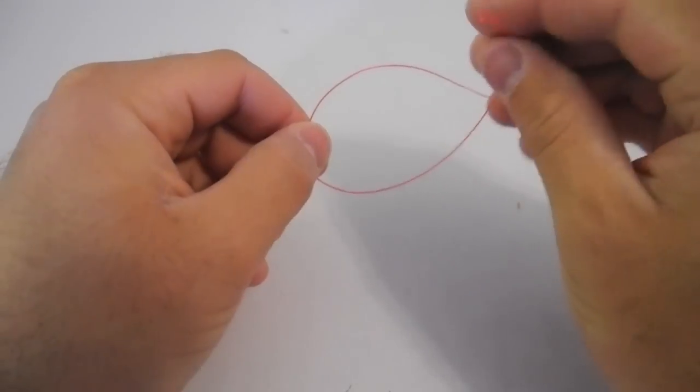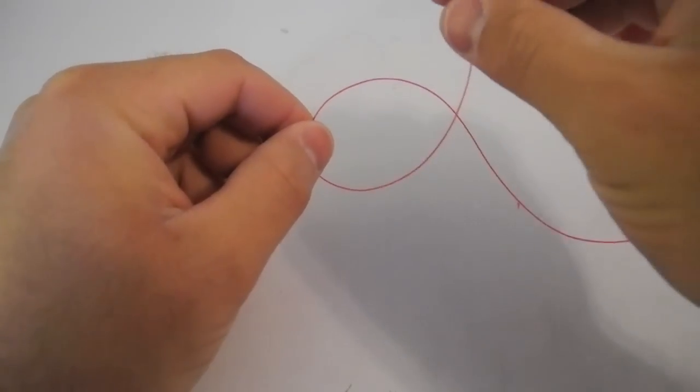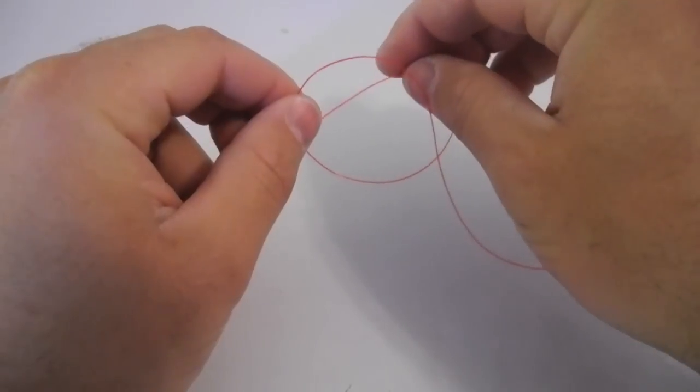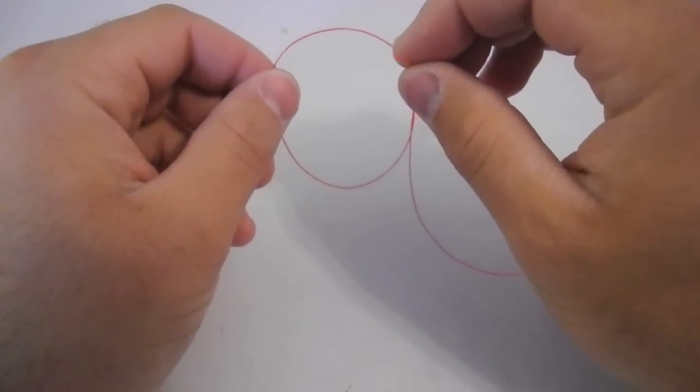So once I've done that, I'm going to cross the tag end on the standing line, just like that, over the top, and I'm going to go through that loop, just like so. Now, once I've done that...